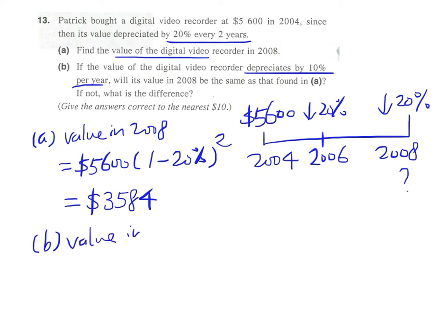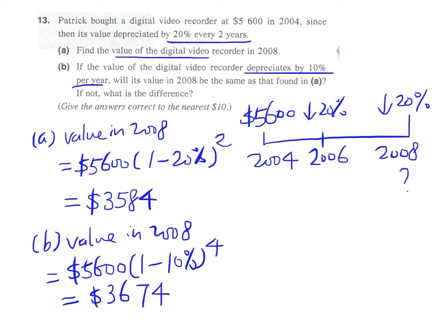The value in 2008 under the new situation will be $5,600 times (1 minus 10%)^4, because it's 10% per year and we have four times of depreciation, so the power will be the number four. Our calculator gives us the answer: $3,674.